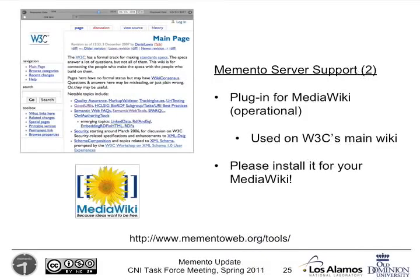On the server side, we also have an operational plugin for MediaWiki — the platform that Wikipedia uses, as one of many examples. It's also been installed on the W3C wiki, making it Memento compatible, so you can go back and see all of the old versions of pages using the Memento clients. If you have a MediaWiki somewhere, please install the plugin — you can get it from the tools URI or directly from the MediaWiki website.